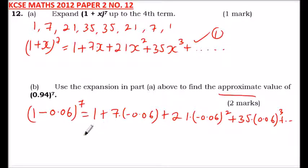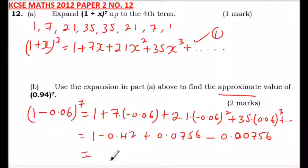Because we are approximating, we just use what is in part a. Now you use your calculator, you'll be able to get 1-0.42 plus 0.0756, then we have minus, when you work out that you get 0.00756.